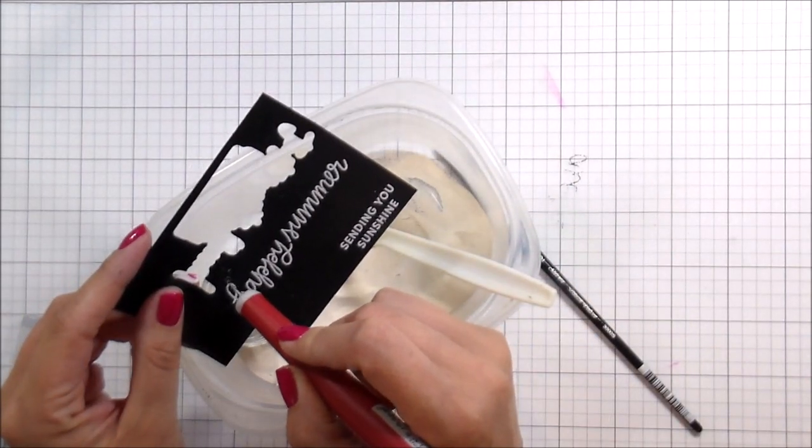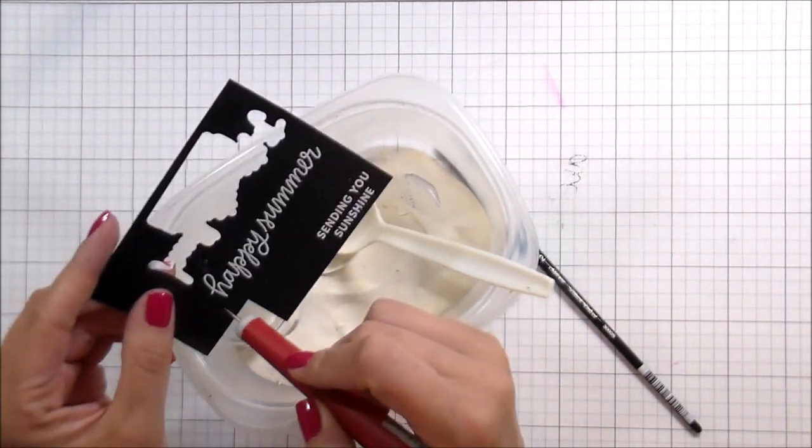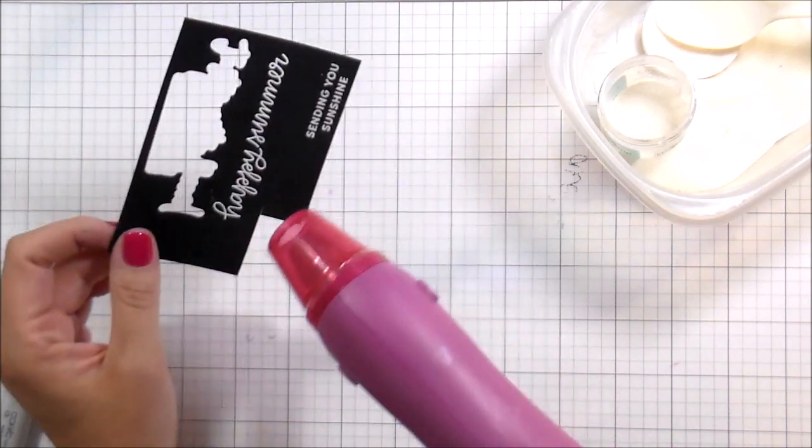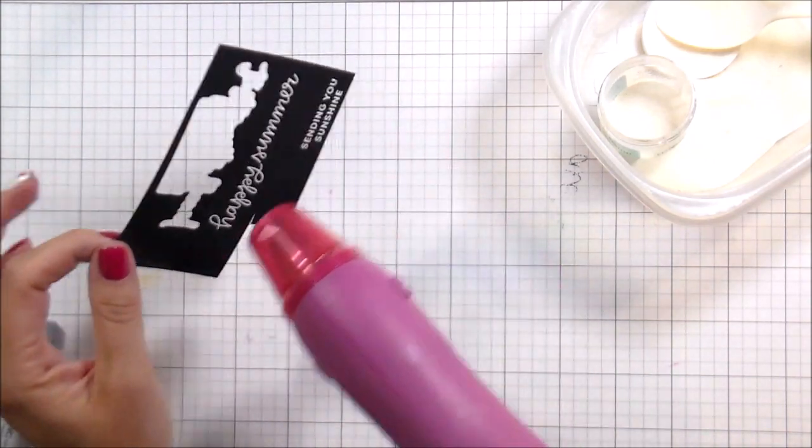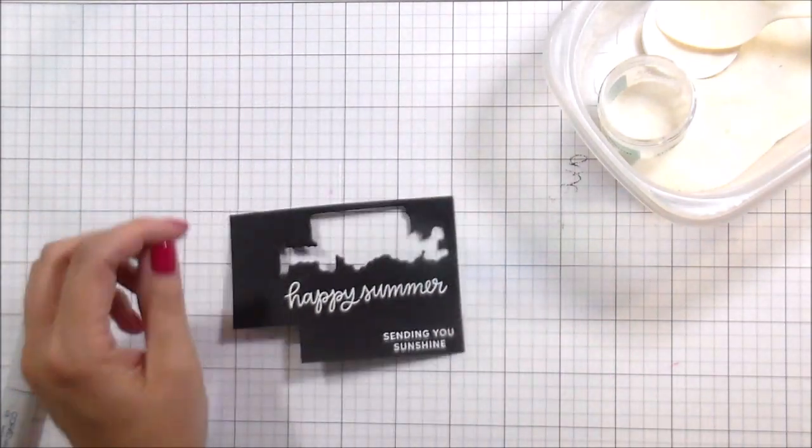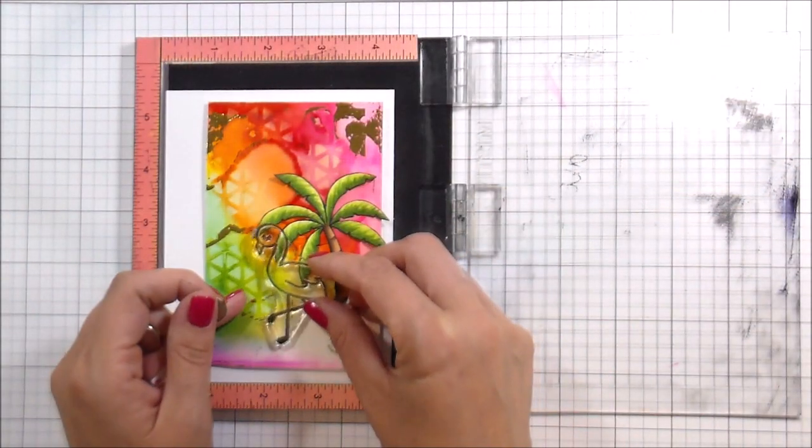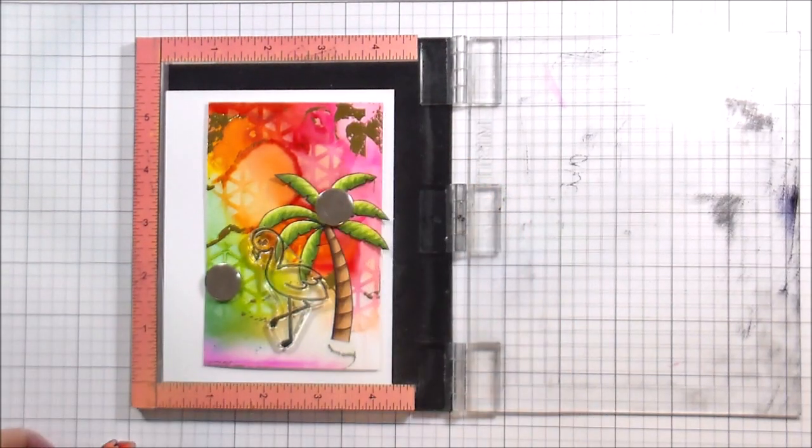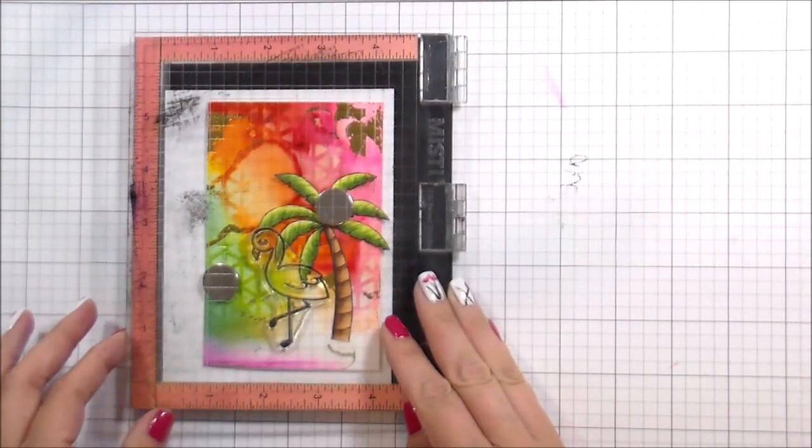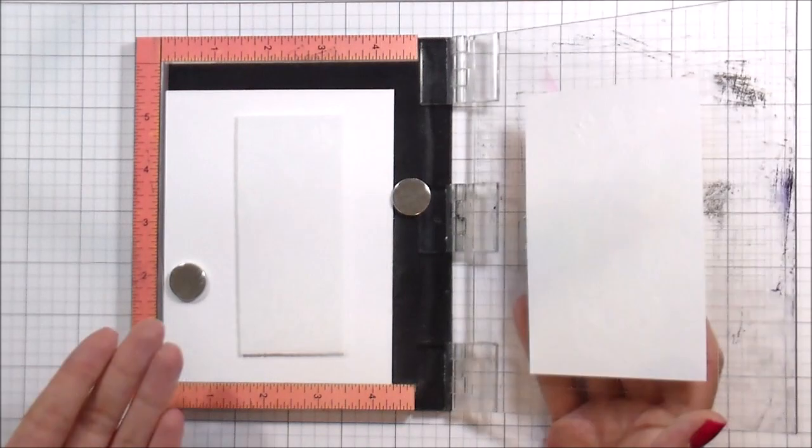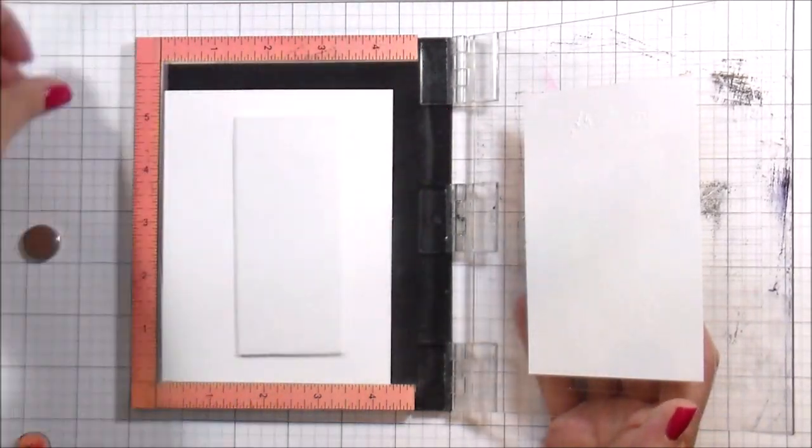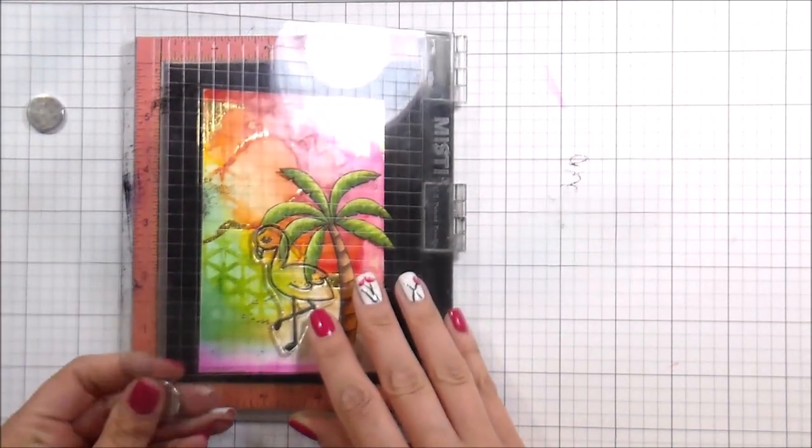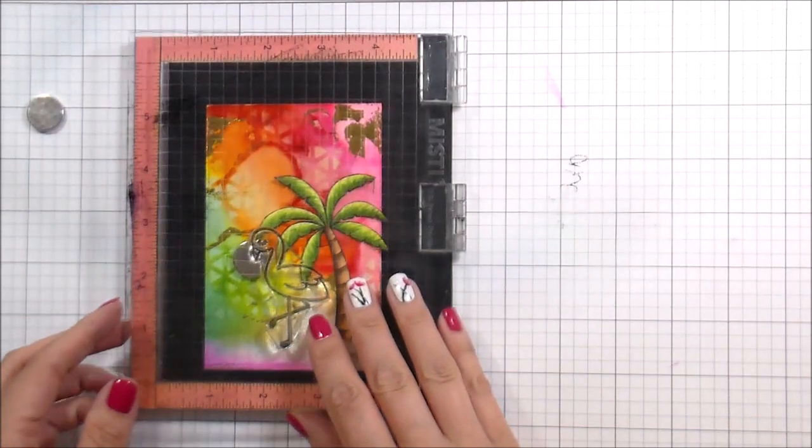I'm just going to glue any of my accessories down flat, so like the tree branch for the toucan, the palm tree for the flamingo. The focal point got popped up. Then I realized that I have to get my sentiments together so I know where to stamp these legs, which I'm going to do with heat embossing. I'm going to stamp in Versamark ink, which is just a clear sticky ink that will hold your embossing powder.